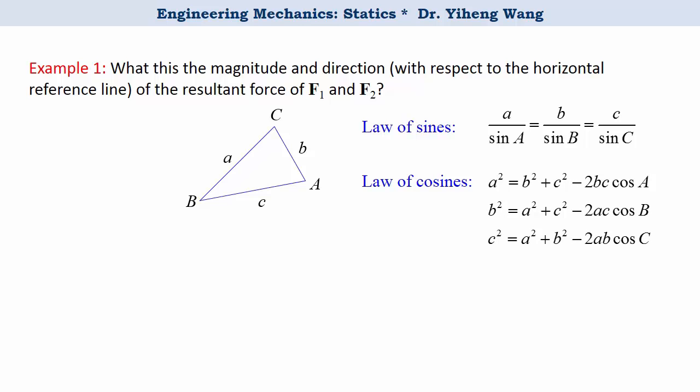Based on the information we have, we know that a is 100, b is 60, and angle c is 75 degree. We can start with this equation to calculate the side length c, and then use this equation to calculate angle b. And here are the results.